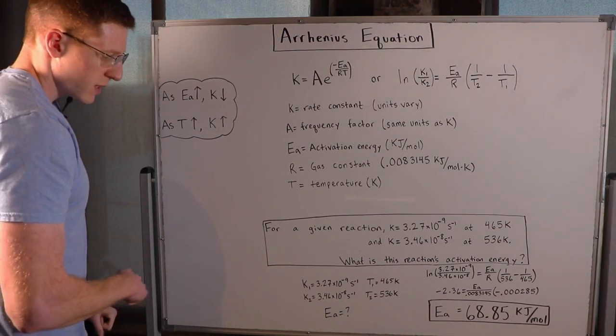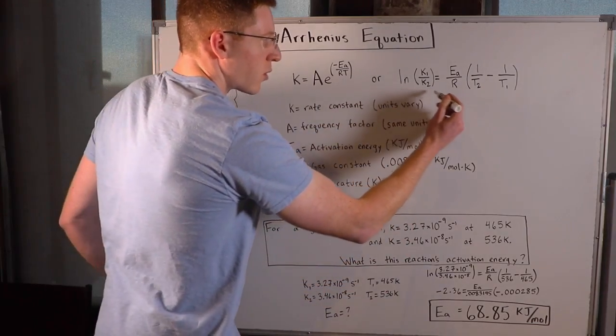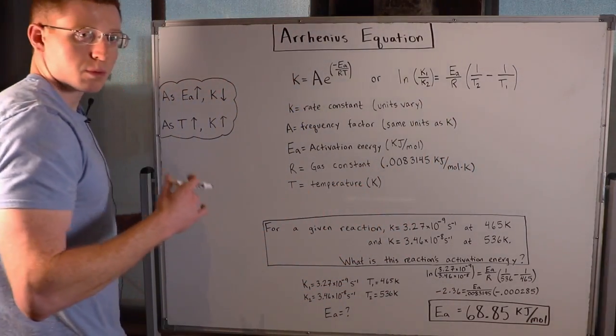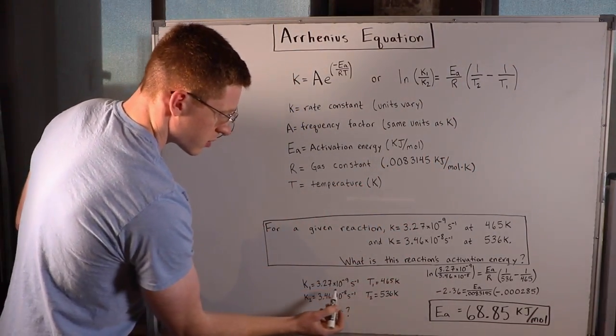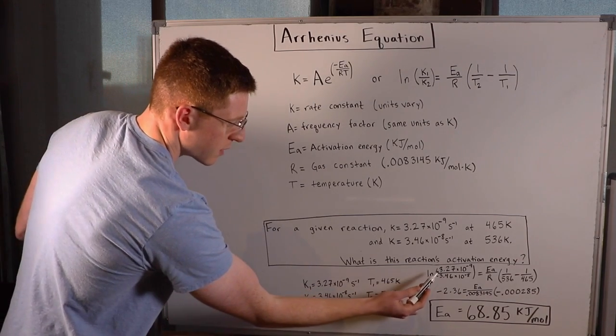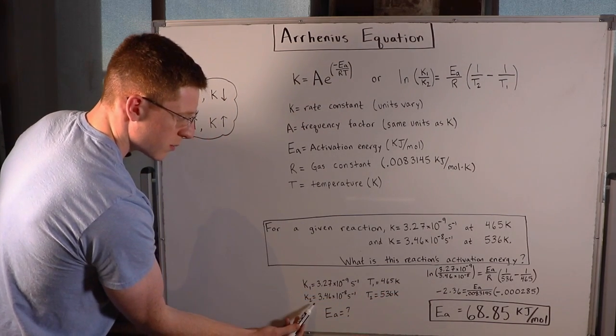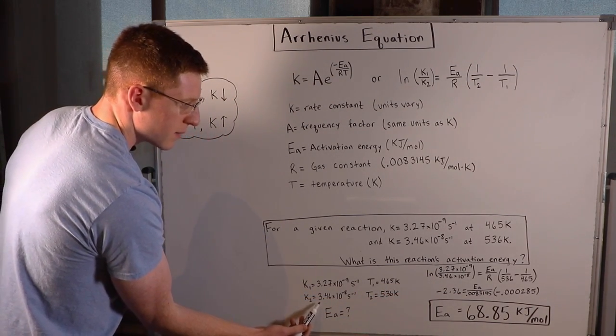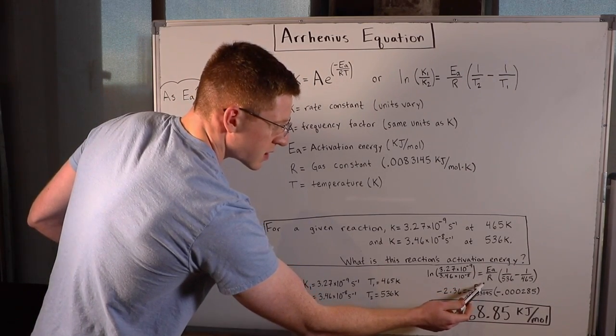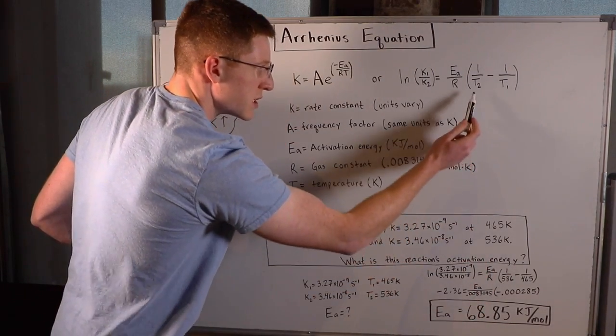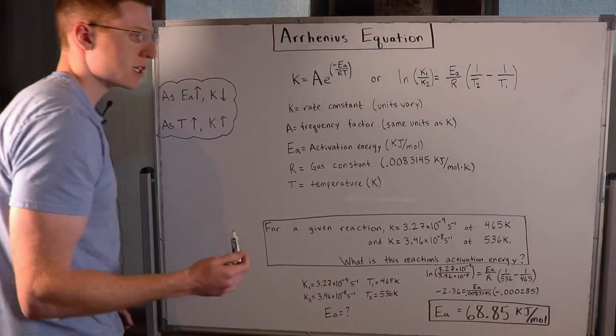We're solving for the activation energy using this form of the Arrhenius equation. I plugged everything in: ln(k1/k2) equals ln(3.27×10⁻⁹/3.46×10⁻⁸) equals Ea/R times (1/T2 - 1/T1).